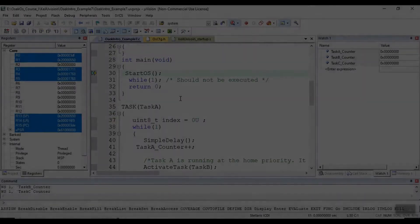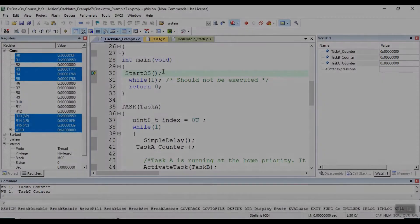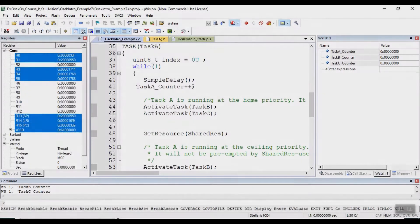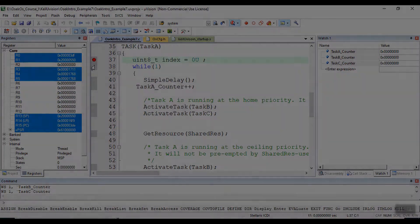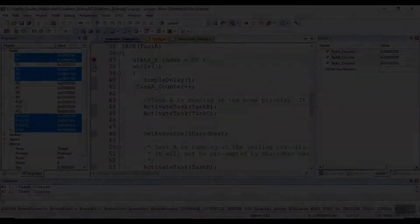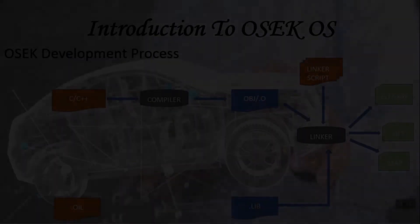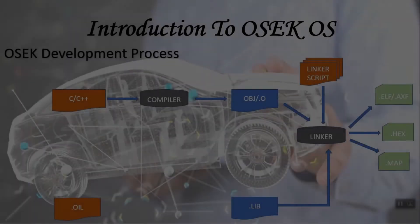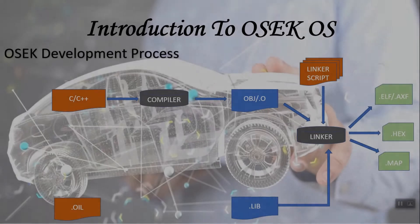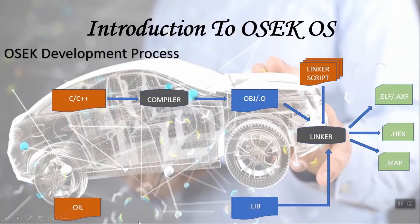Here I have the start OS function and the first task that should be run and the runtime behavior of the software. The idea here is that the OIL description — the formal description of your application software — is the input of the system generation step.